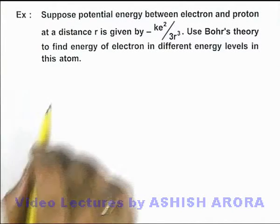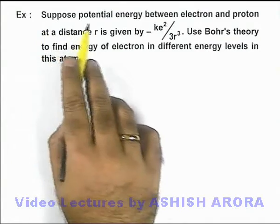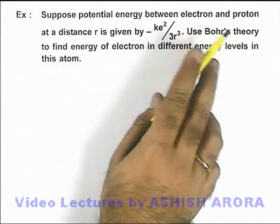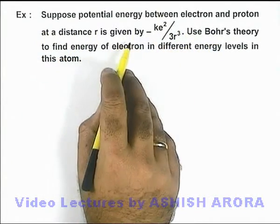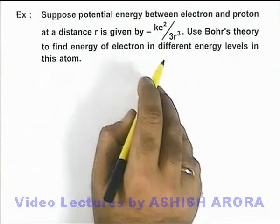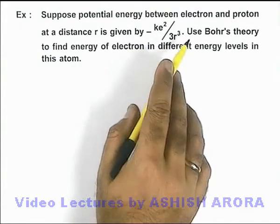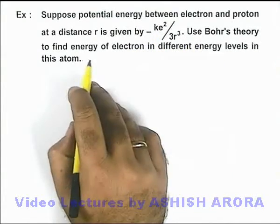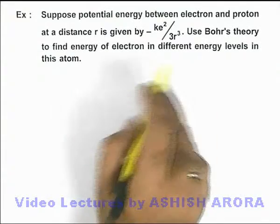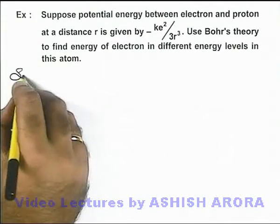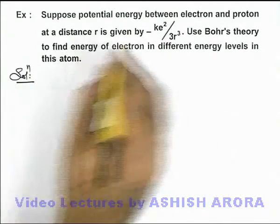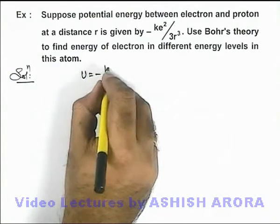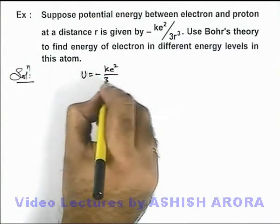In this example, we need to suppose potential energy between electron and proton at a distance r is given by minus k e square by 3 r cube, and we are required to use Bohr's theory to find energy of electron in different energy levels in this atom.